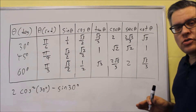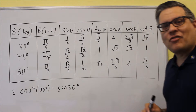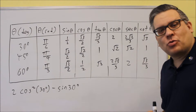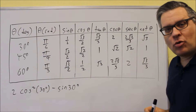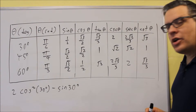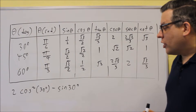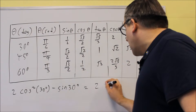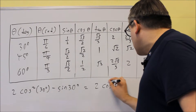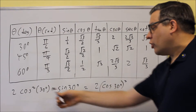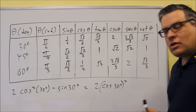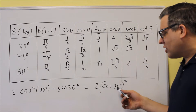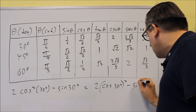The instructions say to use the table to find the exact value without using a calculator. Whenever something says exact value, you don't want a decimal — use the table values directly. We're going to do that for 2cos²(30) − sin(30). Whenever you see squared notation like that, we can rewrite it as 2 times [cosine 30°]² minus sine 30. That's exactly what the square means — you're taking cosine 30 and squaring it.